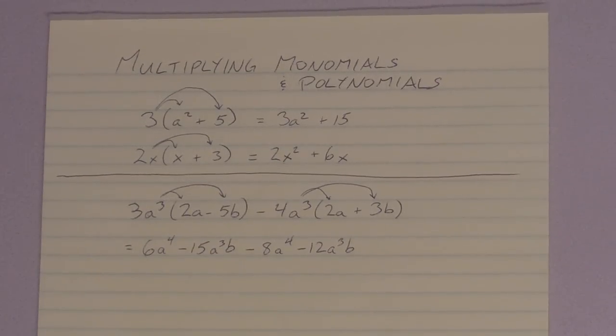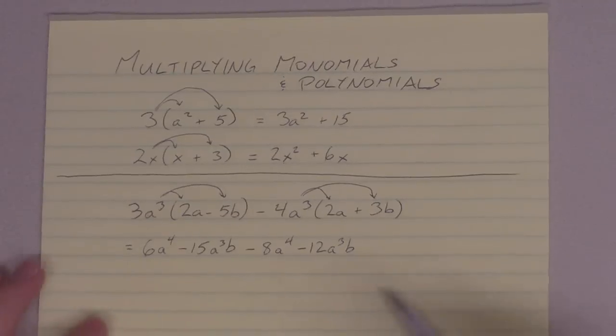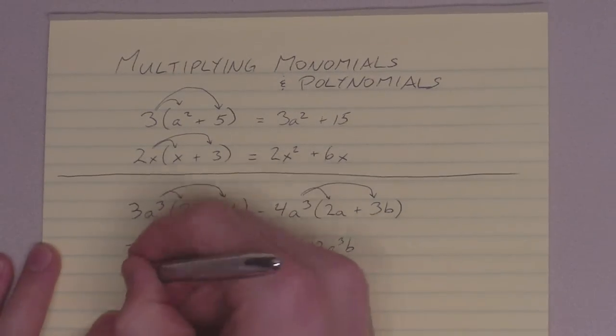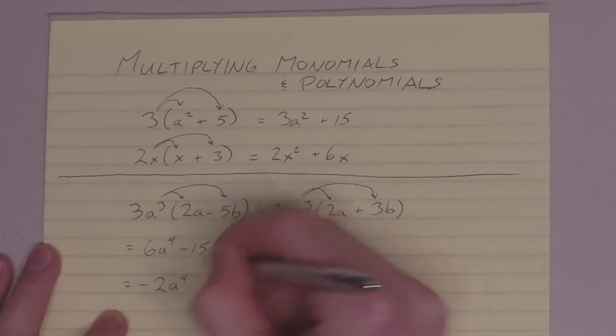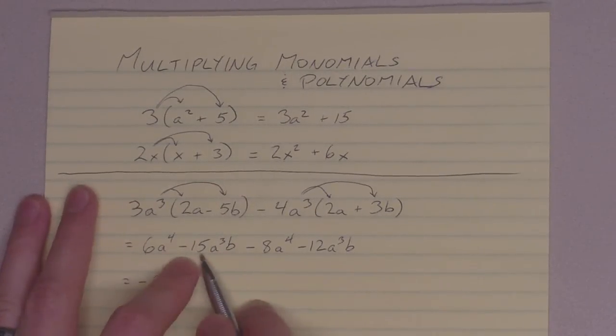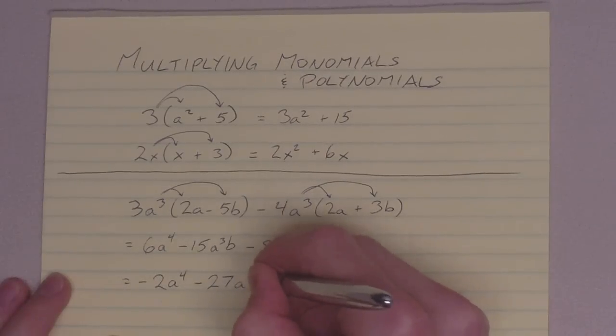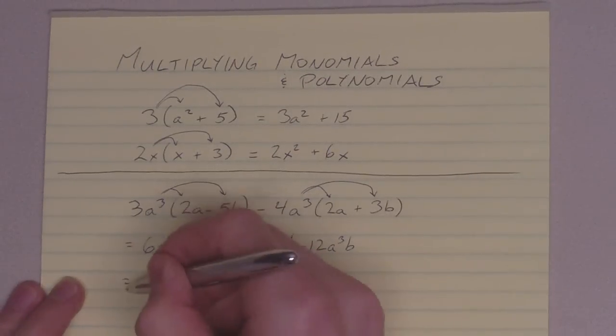Now we're at the stage where all we're doing is collecting like terms. Look for terms that have the same variables in them, each with the same exponent. 6a to the 4th, a to the 4th, collect those two. 6 and negative 8 gives me negative 2a to the 4th. I've got some a cubed b's here and some more a cubed b's. Negative 15, negative 12 gives me negative 27a cubed b.